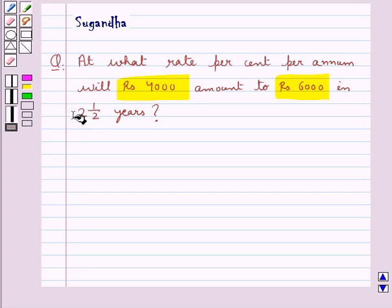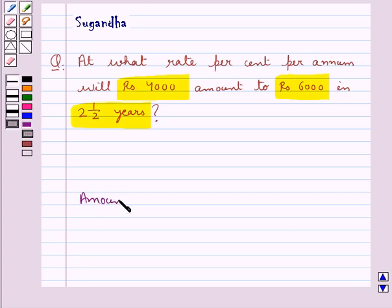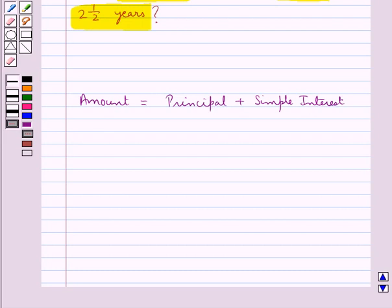We know that amount is equal to principal plus simple interest, and the simple interest SI is equal to P × R × T / 100.